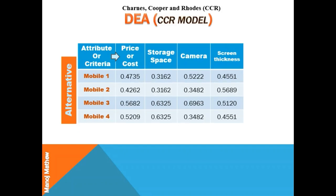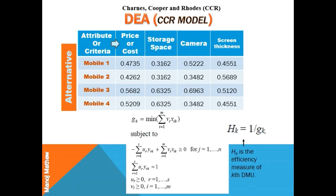Although there are several DEA models, I will tell you about the CCR model. This model was first introduced in 1978. The basic fractional CCR model is a non-convex programming problem, which is very tough to compute. So Charnes in 1978 developed a linear programming model of CCR. This linear programming model can be articulated either by maximizing output or minimizing the input criteria.